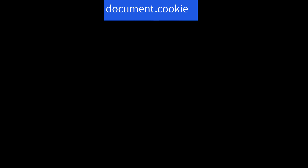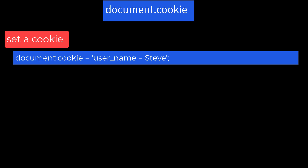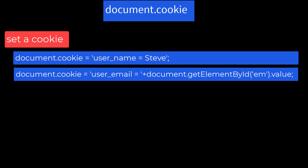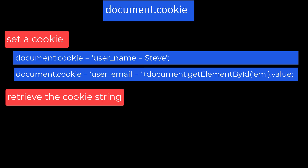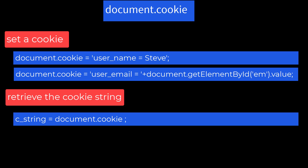Each document has a cookie property which can be set or accessed using JavaScript. To set a cookie: document.cookie = 'username=Steve', or document.cookie = 'useremail=' + document.getElementById('em').value — so this is a literal string 'useremail=' followed by a control element's value. To retrieve the cookie string: cString = document.cookie.